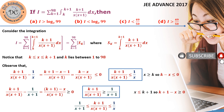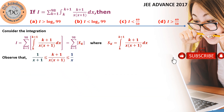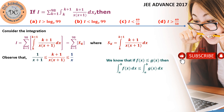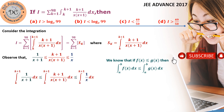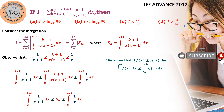Now we apply integration to the inequality. We know that if f(x) ≤ g(x) then the integral from a to b of f(x)dx is less than or equal to that of g(x)dx, so the inequality sign is preserved. Applying this, the middle integral is sk, so sk lies between the integrals of 1/(x+1) and 1/x from k to k+1.